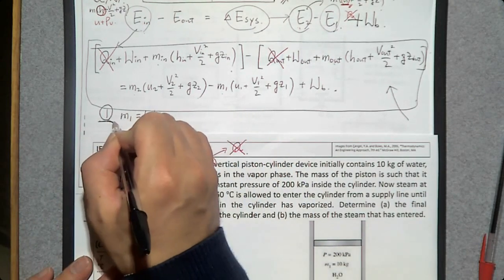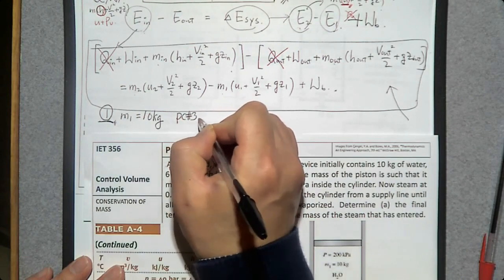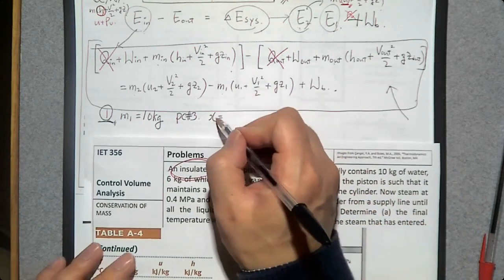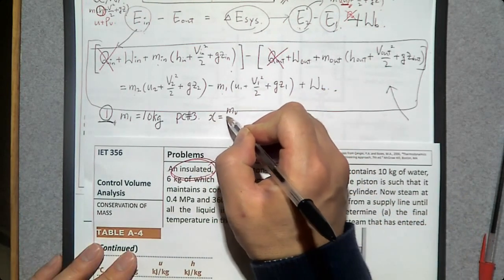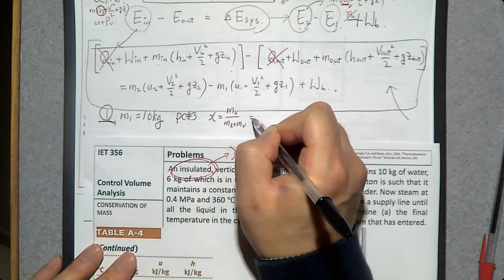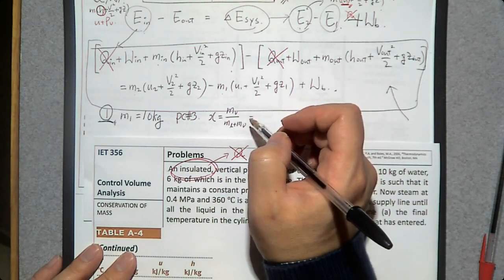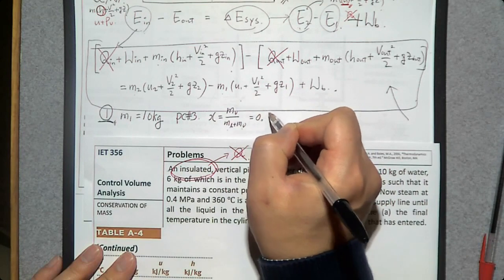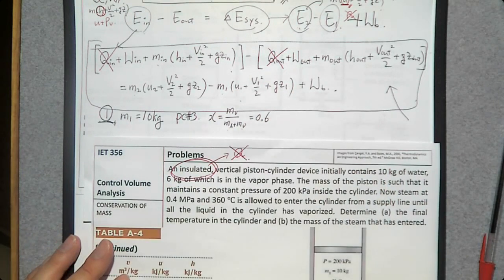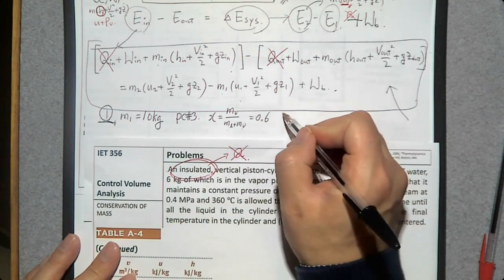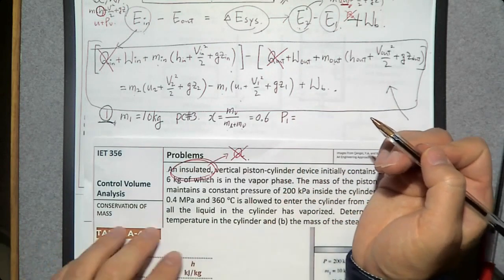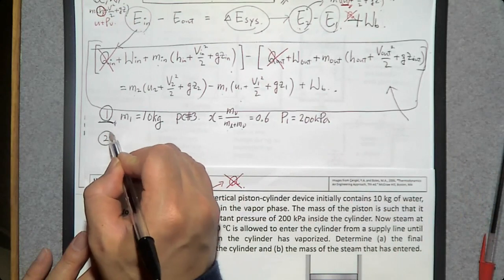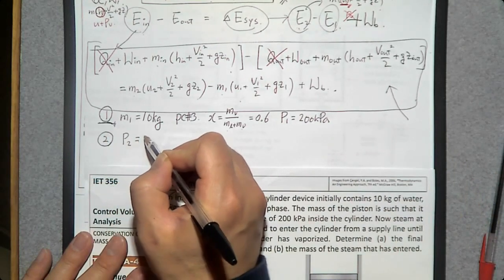At initial state 1, we have a saturated mixture. Quality X is the mass of vapor over the total mass: X = 6 / (4 + 6) = 6/10 = 0.6. It is also a constant pressure process, so P1 = 200 kPa. Since pressure is constant, P2 = P1 = 200 kPa. For a constant pressure process, the moving boundary work is W_b = P(V2 − V1), as studied in Chapter 3.